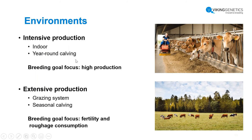With regard to the different environments we aim to look at, we want environments that cover all Gentor countries, and we went for the two most extremes. We want to go for an intensive production with indoor year-round calving, high input, high output, where the breeding goal is more focused toward high production. Then we want to look at a more extensive production — a grazing system with seasonal calving, where it is important that all cows calve at the same time, and in the breeding goal context there is more focus toward fertility and roughage consumption.